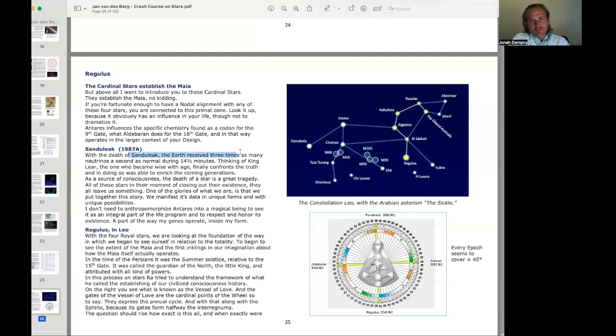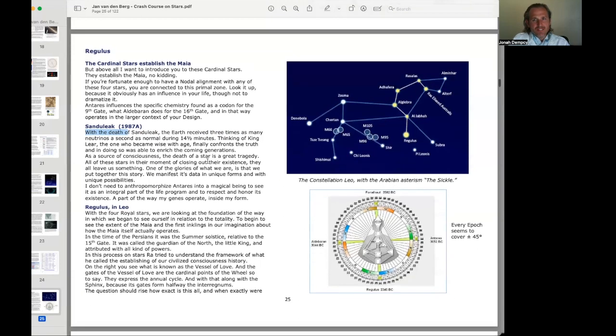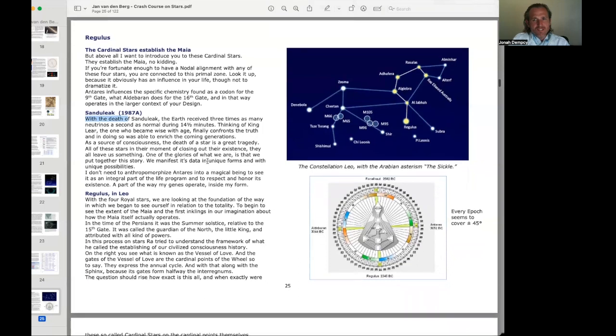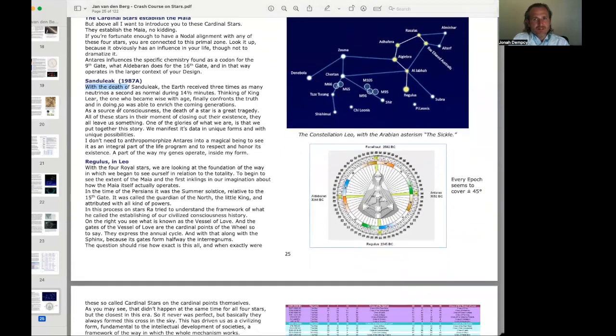Antares influences the specific chemistry found as a codon for the ninth gate, what Aldebaran does for the 16th gate, and in that way operates in the larger context of your design. With the death of Sanduleak, the Earth received three times as many neutrinos a second as normal for 14 and a half minutes. Thinking of King Lear, the one who became wise with age, finally confronts the truth, and in doing so, was able to enrich the coming generations.